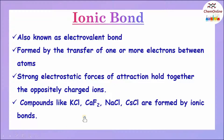Compounds like potassium chloride, calcium chloride, sodium chloride, cesium chloride, etc. are formed by ionic bonds. Now, let us see an animation on the formation of an ionic compound like sodium chloride.